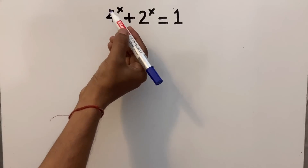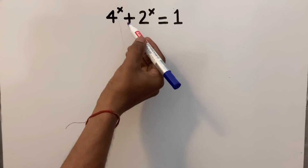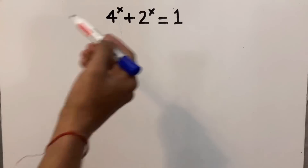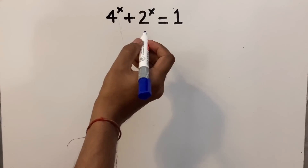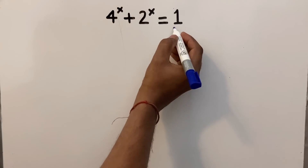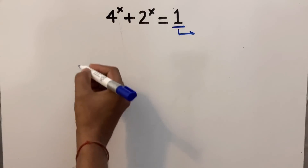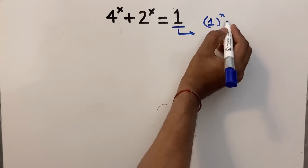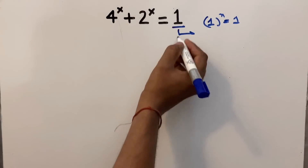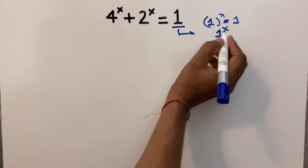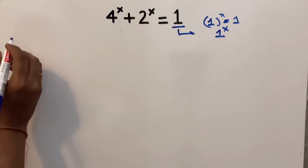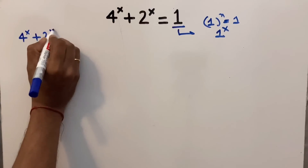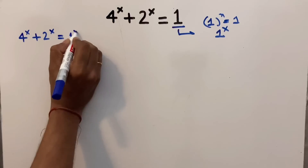In this problem, we have to find the value of x which satisfies this equation: 4 to the power x plus 2 to the power x equals 1. To solve this equation, we will simplify the right side. Since 1 to the power n always equals 1, this 1 can also be written as 1 to the power x. So the equation simplifies to 4^x + 2^x = 1^x.